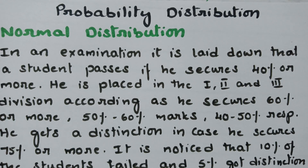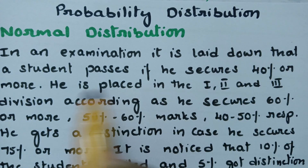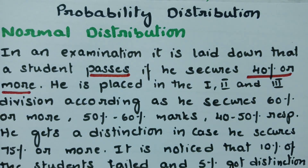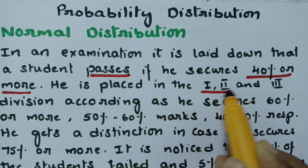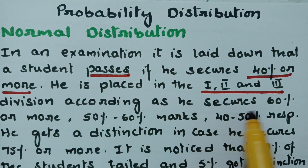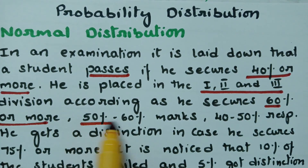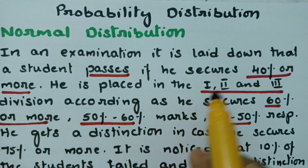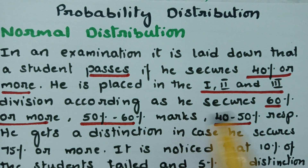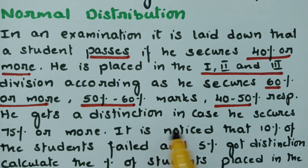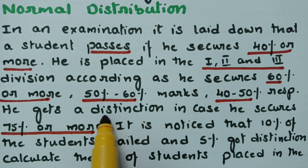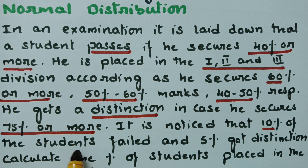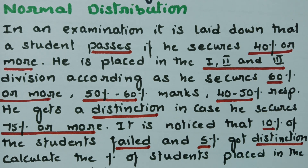This video is on normal distribution. In an examination, a student passes if he scores 40 percent or more. He is placed in first, second, or third division accordingly as he secures 60 percent or more, 50 to 60 percent, and 40 to 50 percent respectively. He gets distinction if he secures 75 percent or more.